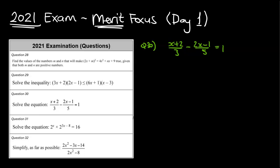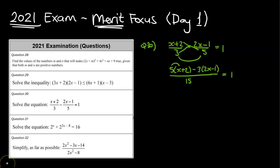Because it is subtraction, I'll use the crisscross smiley face method. Bottom times bottom is 15. First cross: 5(x + 2). Next cross: that's negative 3, times (2x − 1). All equal to 1. Expanding the top carefully — that minus 3 has a big impact: 5x + 10 − 6x + 3, all over 15, equals 1.